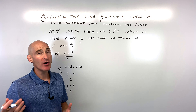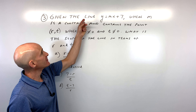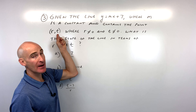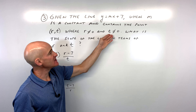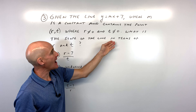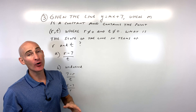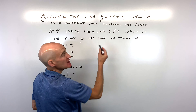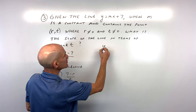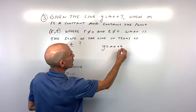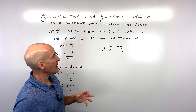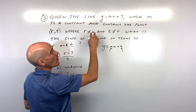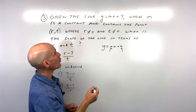Number three — pause the video and try this one. Given the line y equals mx plus seven, where m is a constant and contains the point r comma t, where r and t are both non-zero, what is the slope of the line in terms of r and t? They're testing us on the slope-intercept form y equals mx plus b, where b is the y-intercept and m is the slope.